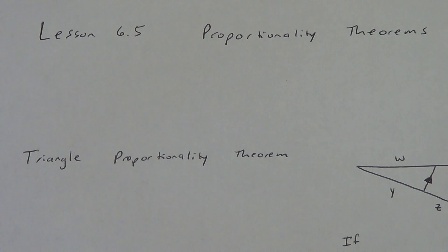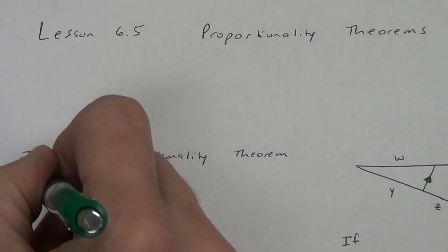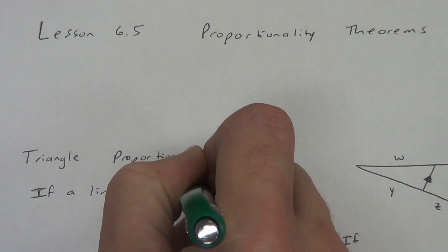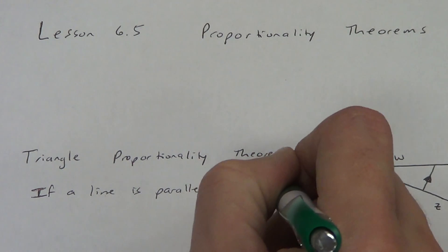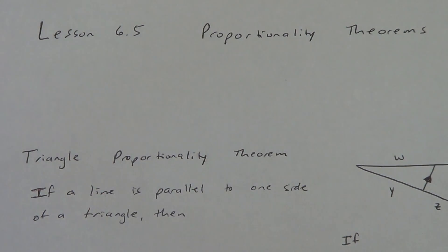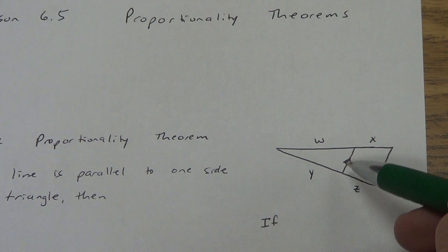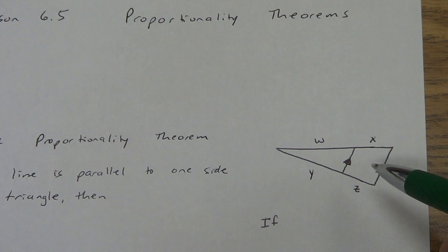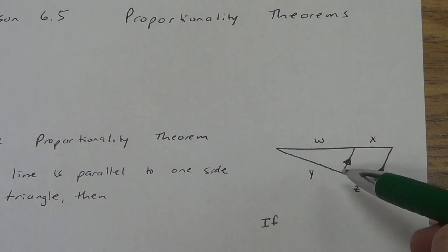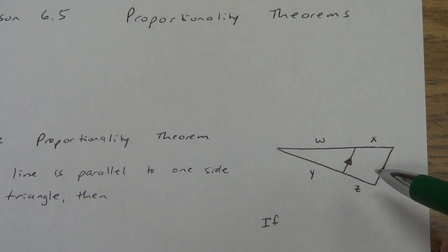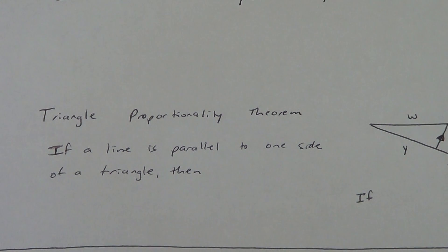The Triangle Proportionality Theorem says: if a line is parallel to one side of a triangle... Let's look at that picture. Do you see how I have this line inside the triangle that's parallel to this side? Some of you might say that's kind of like a mid-segment — and yes, it is, except the mid-segment had to be right in the middle. This line can be here, way over here, or way up here — anywhere, as long as it's parallel. A mid-segment is just a special version of this.